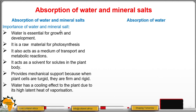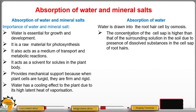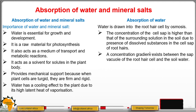Now that we know the roles of water, we can look at the process of absorption of water. Water is drawn into the root hair cell by osmosis. The concentration of the cell sap is higher than that of the surrounding soil solution due to the presence of dissolved substances in the cell sap of the root hair — that means the cell sap is a hypertonic solution, it contains more solutes. A concentration gradient exists between the sap vacuole of the root hair cell and the soil water.